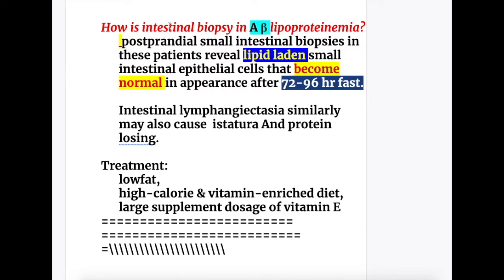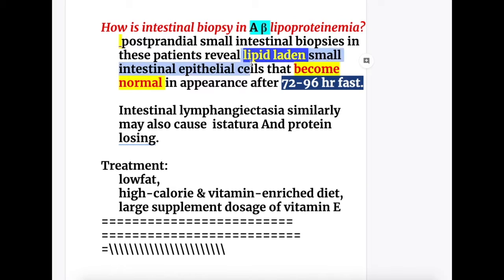The intestinal biopsy features in A-beta lipoproteinemia: post-prandial small intestinal biopsy in these patients reveals lipid-laden small intestinal epithelial cells that become normal in appearance after a 72 to 96 hour fast.